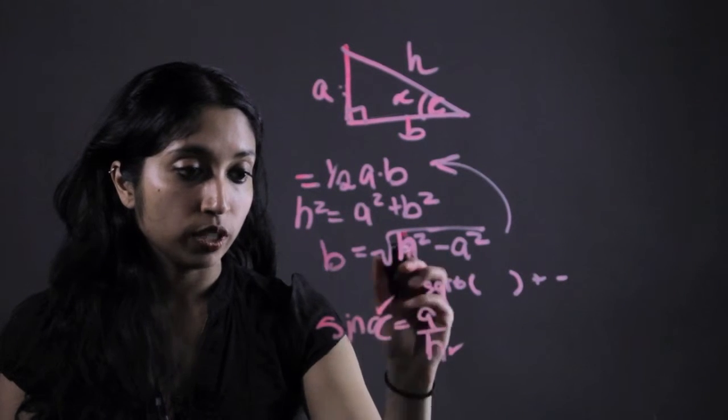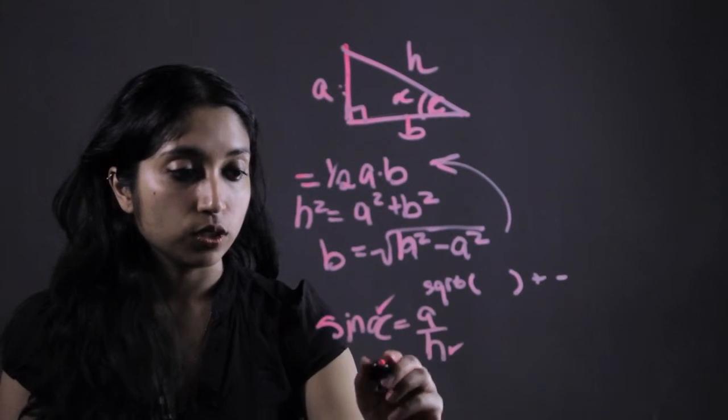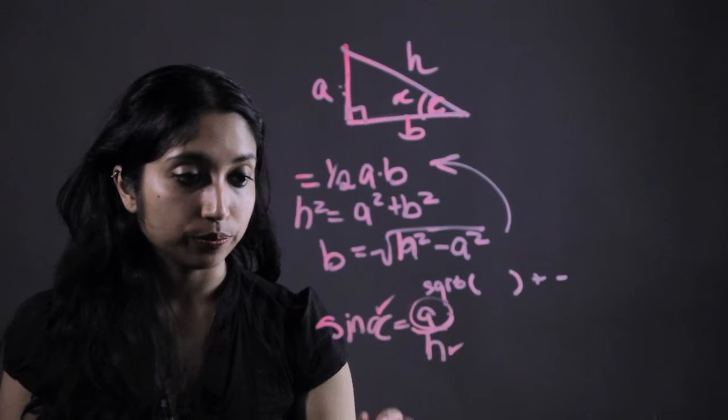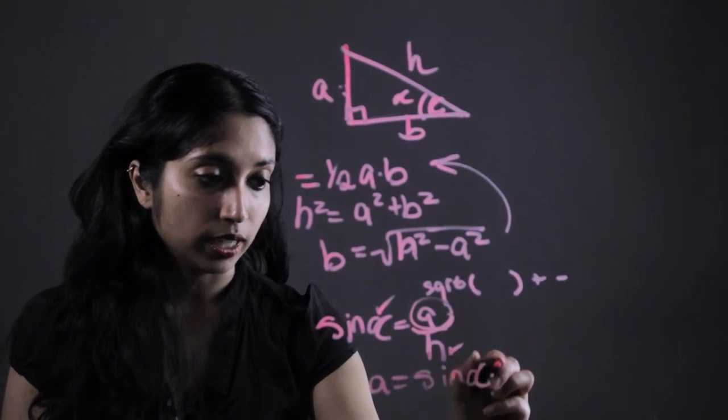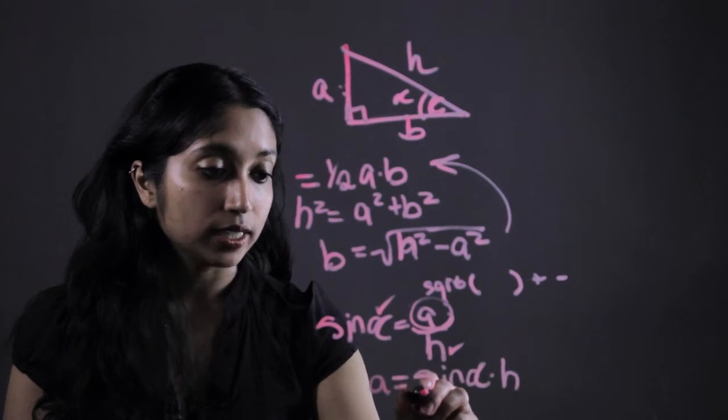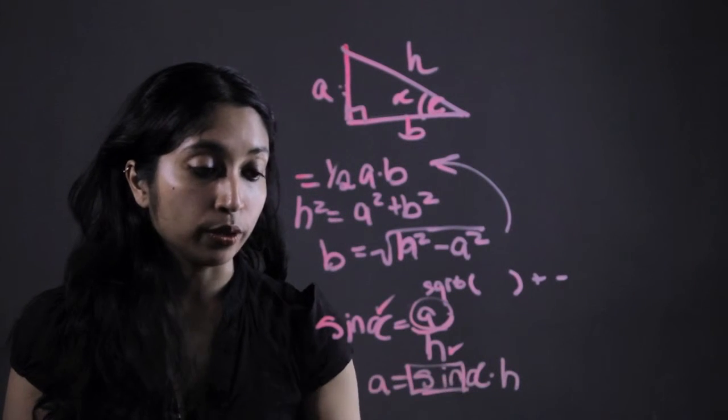So we already know the hypotenuse and we're given alpha. So all we have to do is solve for this a. a equals sine of alpha times h. And the sine is actually going to be a button right on your calculator.